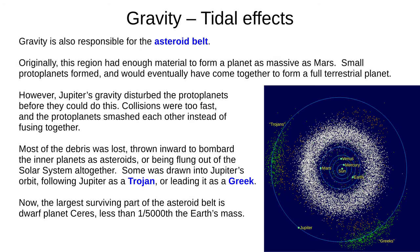Gravity is also responsible for the asteroid belt. Originally this region had enough material to form another planet as massive as Mars, and some small protoplanets, like Ceres, did form. But Jupiter's gravity disturbed the protoplanets, preventing them from becoming a full terrestrial planet. Collisions were too fast — protoplanets smashed each other instead of fusing together. Most of the debris was lost, thrown inward to bombard the inner planets as asteroids, or flung out of the solar system completely. Some was drawn into Jupiter's orbit, following Jupiter as a Trojan, or leading it as a Greek.